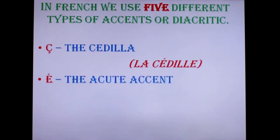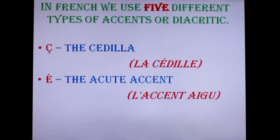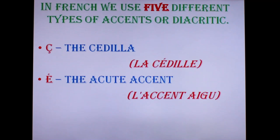The next accent is the acute accent, or 'accent aigu'. The acute accent is only ever found above E. Its role is to change the pronunciation of the vowel. An unaccented E can be pronounced several different ways, but when you use the accent aigu on top of E, the word is pronounced like the A sound in the English words 'say' and 'way'. So try to produce that A sound when using the accent aigu on E.